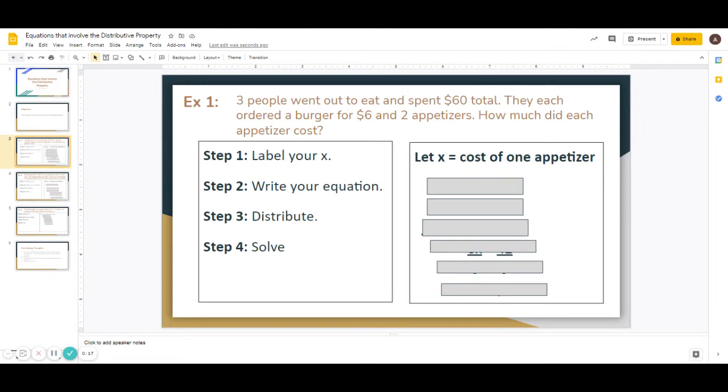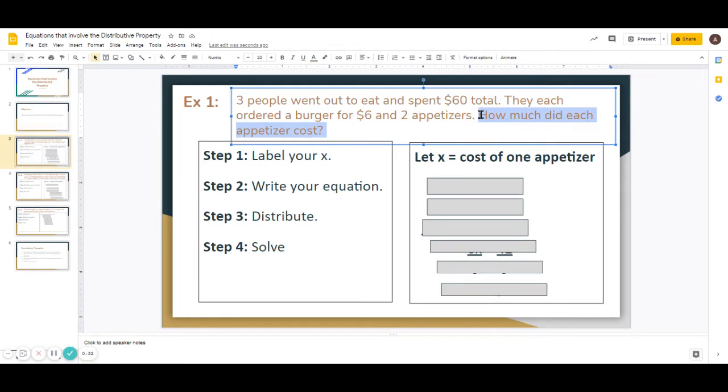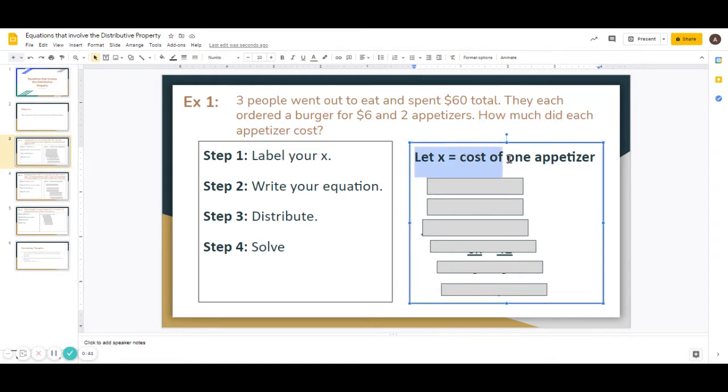Here is our first example. Three people went out to eat and spent $60 total. They each ordered a burger for $6 and two appetizers. How much did each appetizer cost? So the first step is that you want to label your x. The way that you label it is you look to see what is the question that is being asked. The question that is really being asked here is how much did each appetizer cost? So, your label is the cost of one appetizer. So x is the cost of one appetizer.